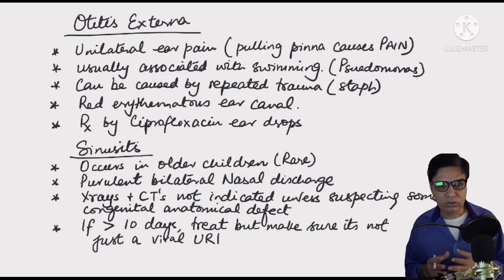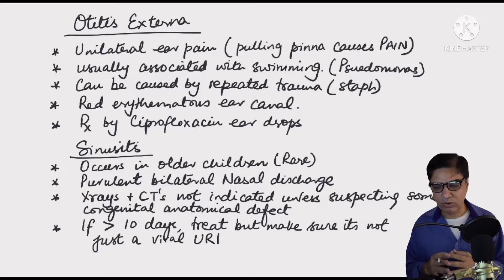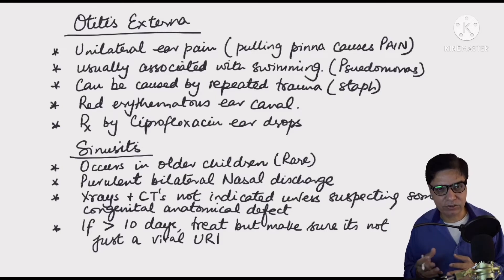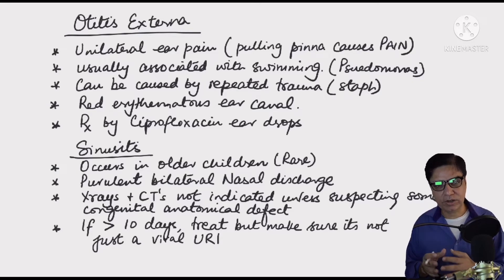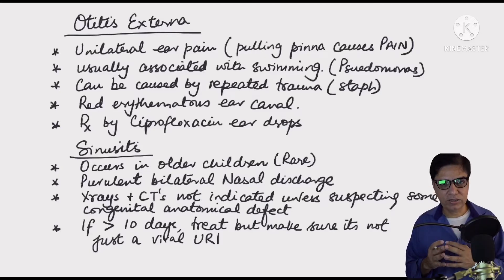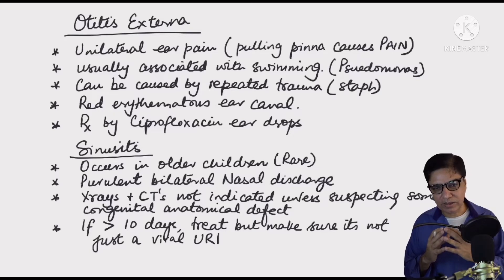How do they present? Most cases present with purulent — greenish, yellowish, foul-smelling — bilateral nasal discharge. It is not unilateral; it's usually bilateral. Unilateral discharge means you must rule out a foreign body. Bilateral purulent nasal discharge in older kids usually indicates something wrong in the sinuses.